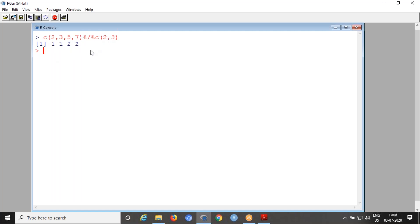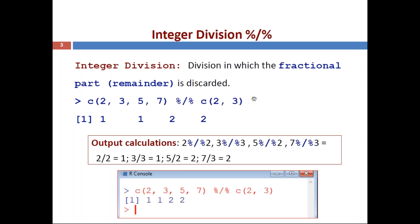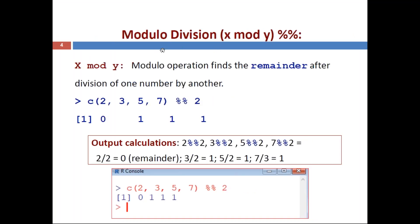Next is the modulo division operation. The general form is x mod y, but in R the symbol used is double percentage — that is, %%. For integer division we use percentage-slash-percentage, whereas for modulo division both symbols are percentages. The modulo operation finds the remainder after division of one number by another — it takes the remainders, whereas integer division discards them.